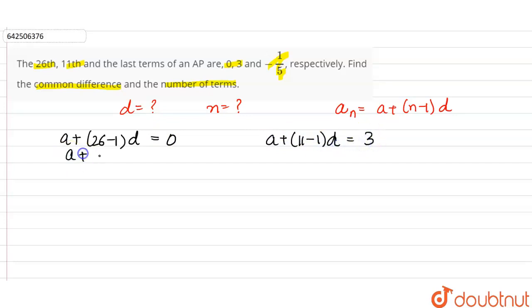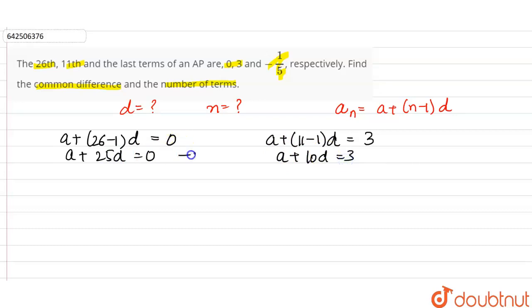So we have: a + 25d = 0 (equation 1) and a + 10d = 3 (equation 2). Now let's subtract equation 2 from equation 1.